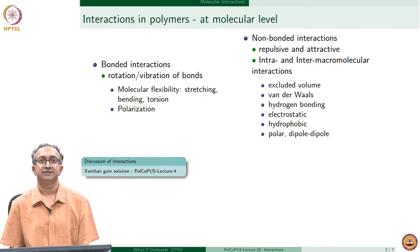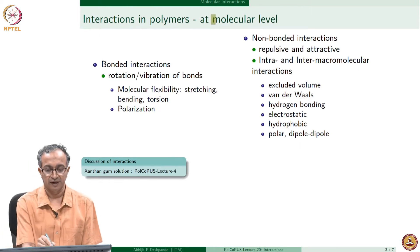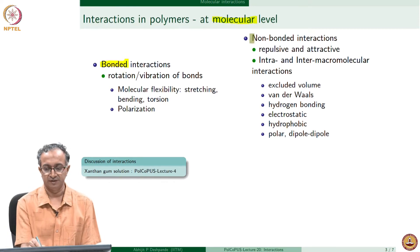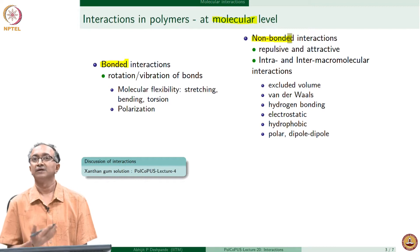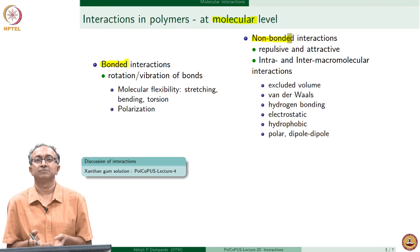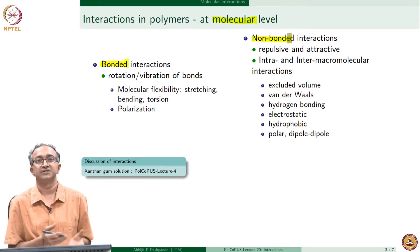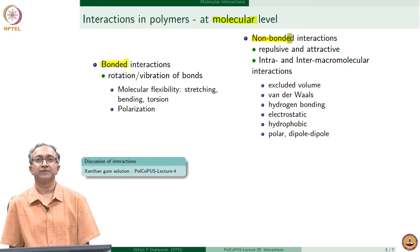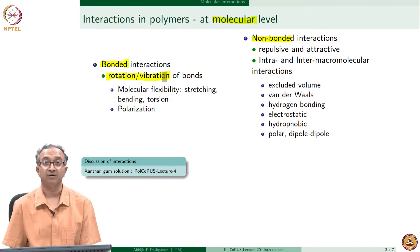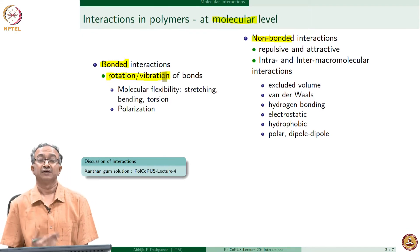When we look at interactions for macromolecules at the molecular level, we can look at the interactions which are due to bonds — covalent bonds. These covalent bonds are either carbon-carbon, carbon-oxygen, carbon-sulfur, or silicon-oxygen. Depending on the nature of the macromolecule, we can have a variety of these bonds. The rotation and vibration of these bonds leads to one set of interactions.